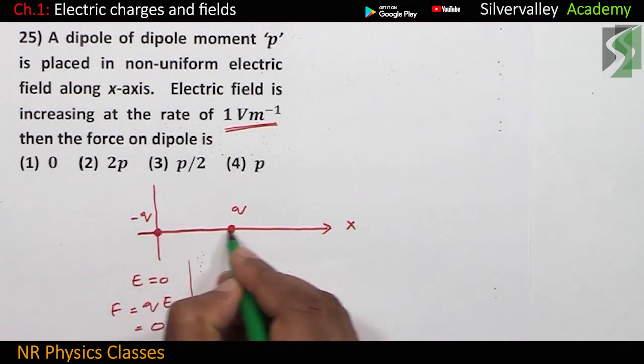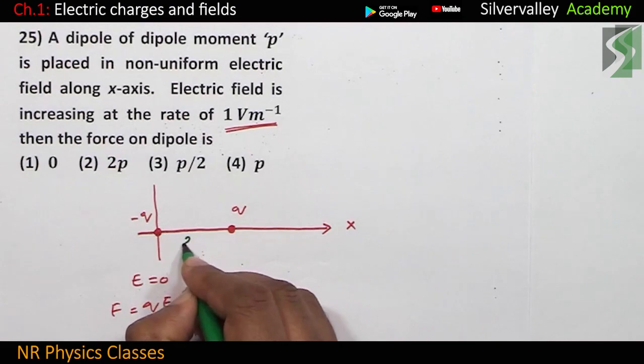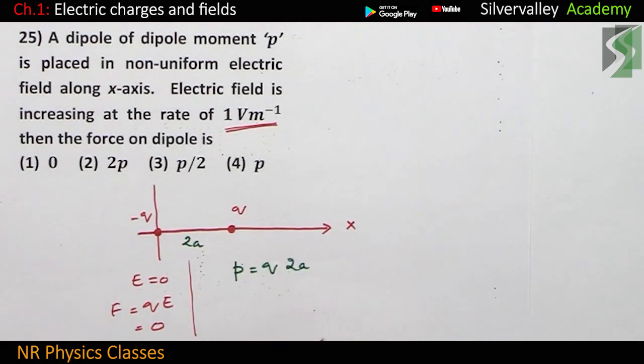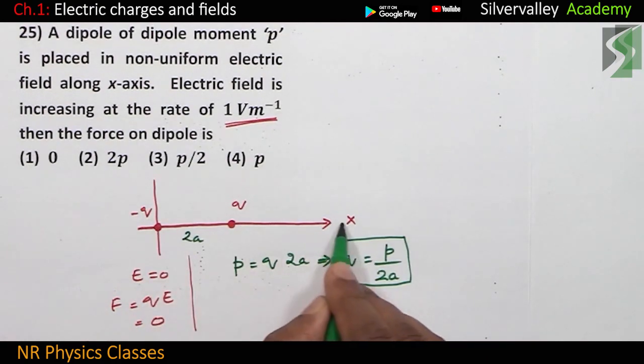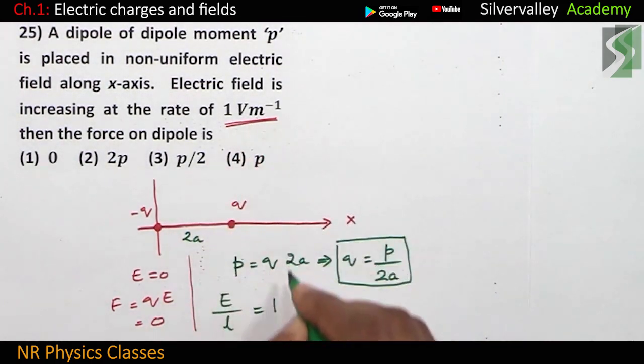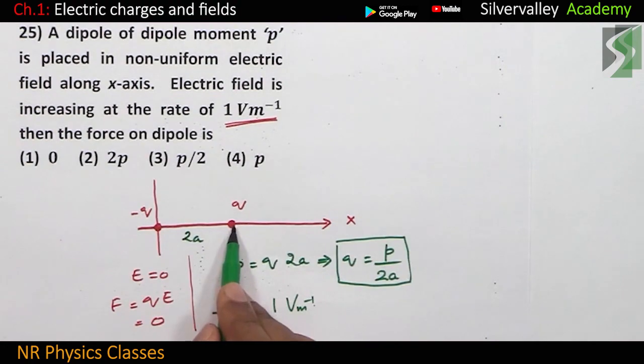Now, distance between these two charges is 2A. Dipole moment is charge into distance between the charges. Now, what is the charge? Charge equal to dipole moment by 2A. Electric field is changing in this direction at this rate. So, electric field per unit length equal to 1 volt per meter.